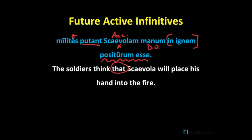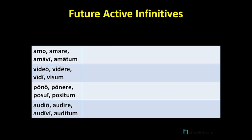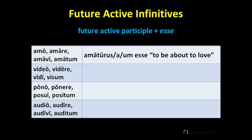Do you recognize anything about positurum esse? You might remember the future active participle, which is formed using -urus, -ura, -urum on the stem of the fourth principal part. And this is what we're going to use to create the future active infinitive — we'll take the future active participle and add esse. Remember that the future active participle is a first and second declension adjective. From amo amare, we'll have amaturus, amatura, amaturum esse.